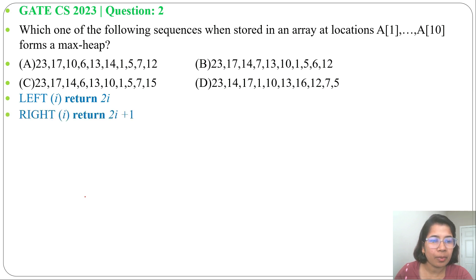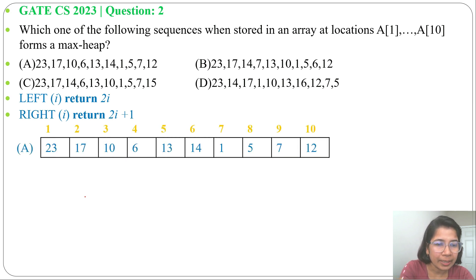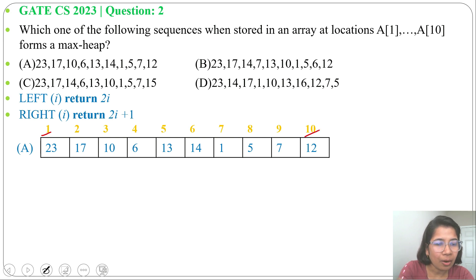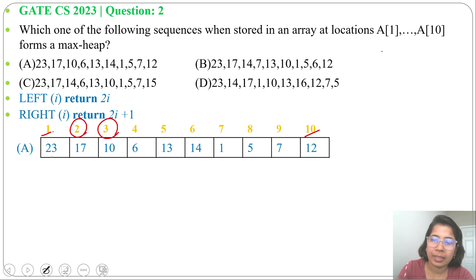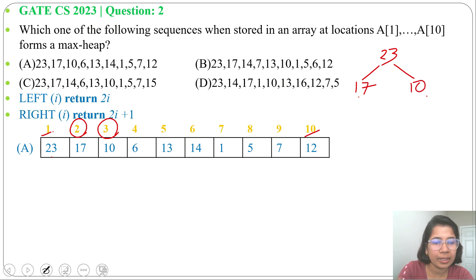Let's check each option one by one to see whether it's a max-heap or not. Option A: these are the indices starting from 1 to 10. For index 1, its left child is index 2 and right child is index 3. So 23's left child is 17 and right child is 10 — both are less than 23.